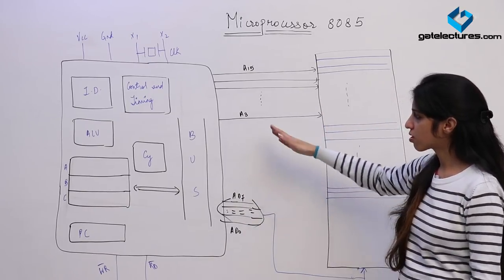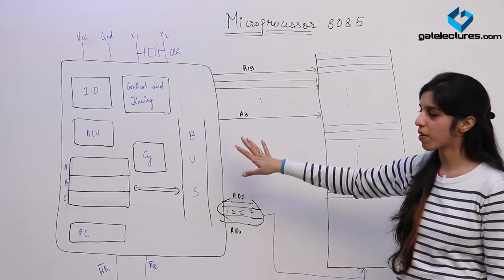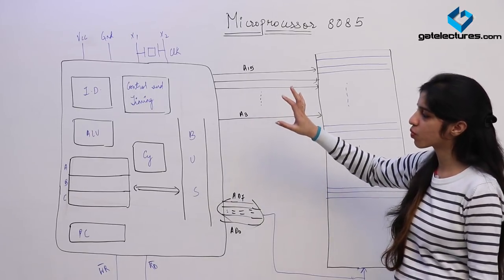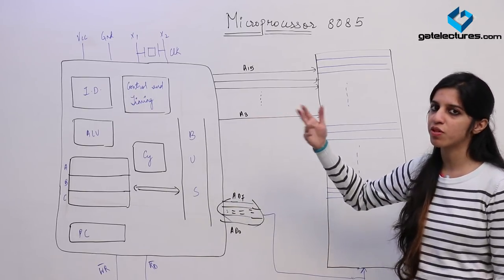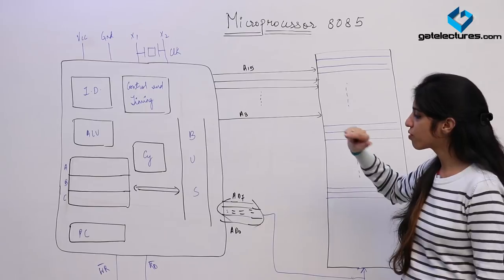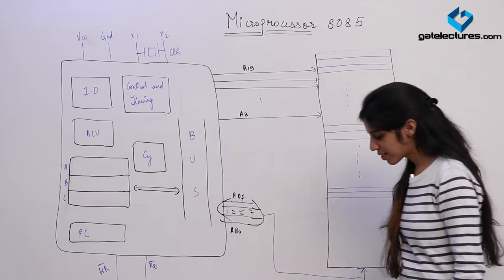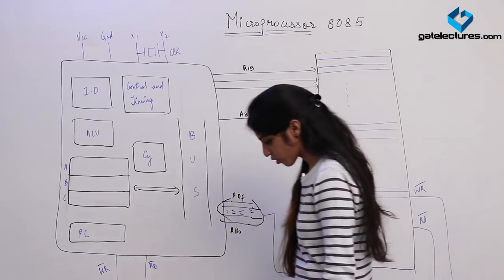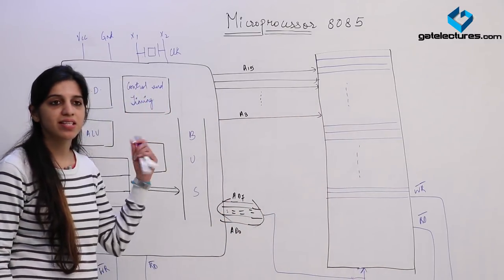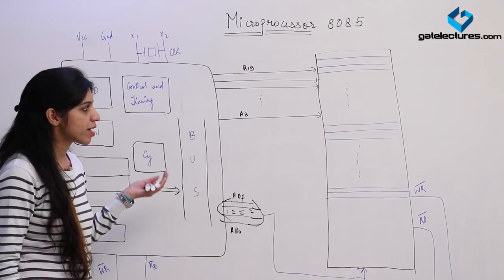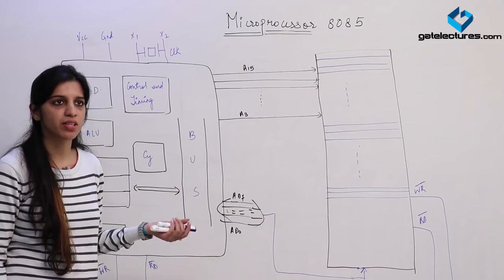Right now we are going to look at the basic structure of the microprocessor — how it was designed, what was the intention, how things were placed, and what problems were faced that required modifications. The microprocessor was basically made to ease tasks — arithmetic functions, logical functions, simple functions of addition and subtraction.